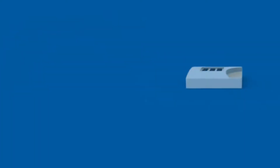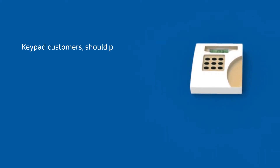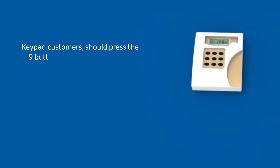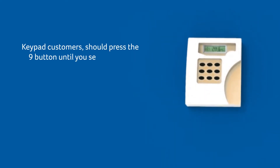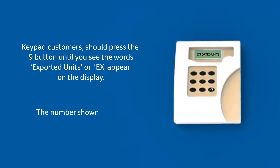Keypad customers should press the 9 button until the words 'exported units' or 'EX' appear on the display. The number shown after this is your export reading.